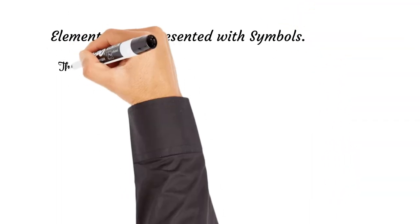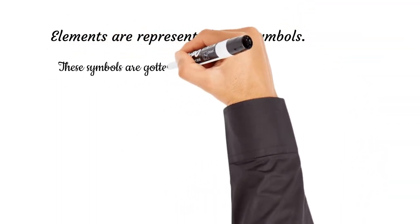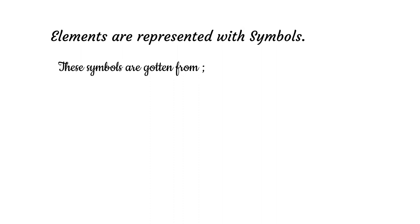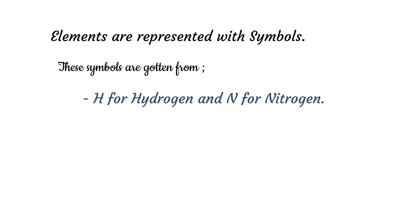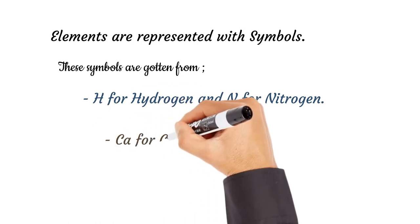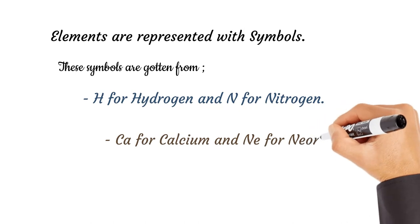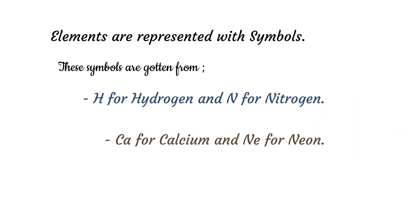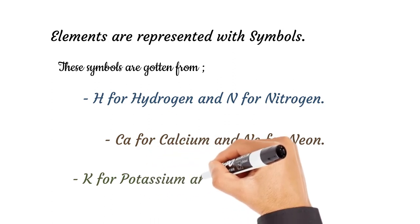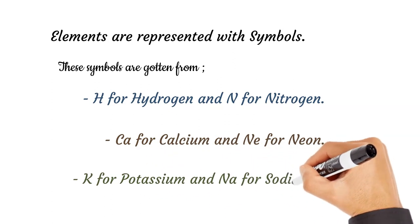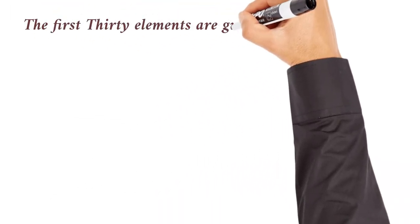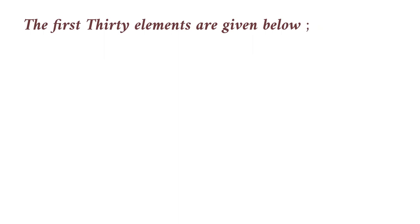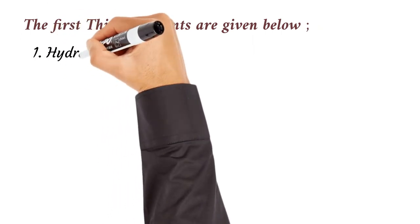Elements are represented with symbols, either from the first letter or a combination of the first and second. For example, H is from hydrogen, N from nitrogen, Ca from calcium, Ne for neon. Some are from Latin words like potassium and sodium. The first 30 elements are given below. Pause the video, study it, know them.